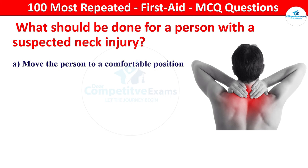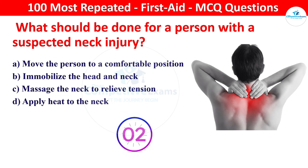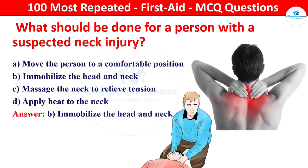Next question: what should be done for a person with a suspected neck injury? Your options: move the person to a comfortable position, immobilize the head and neck, massage the neck to relieve tension, or apply heat to the neck. The right answer is immobilize the head and neck. Immobilizing the head and neck helps to prevent further injury to the spinal cord.